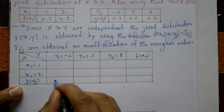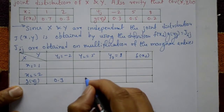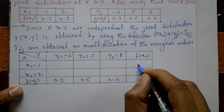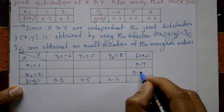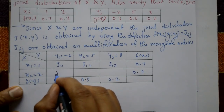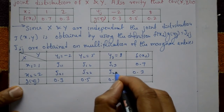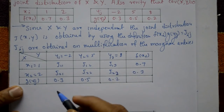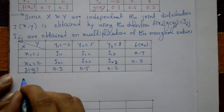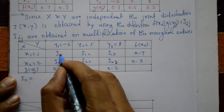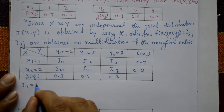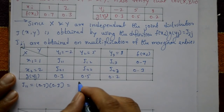The column for y = minus 2 has marginal 0.3, y = 5 has 0.5, and y = 8 has 0.2. Row-wise, x1 gives 0.7 and x2 gives 0.3. The joint table entries are j11, j12, j13, j21, j22, j23. Computing j11: i = 1, j = 1, so j11 = f(x1) × g(y1) = 0.7 × 0.3 = 0.21.